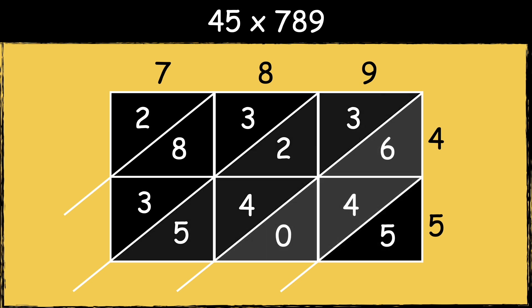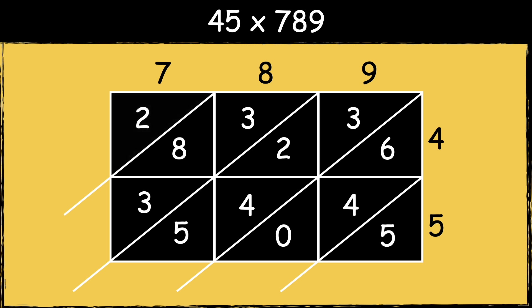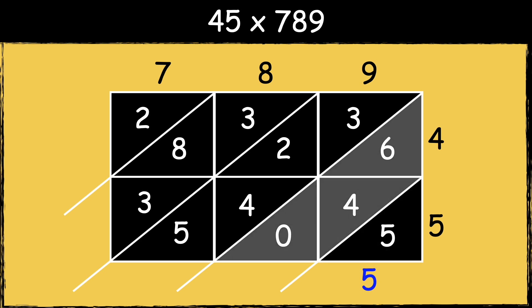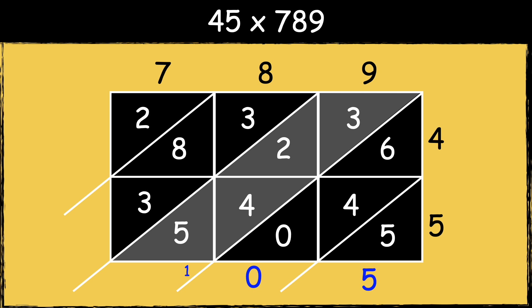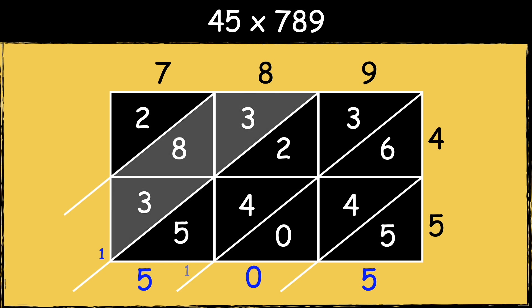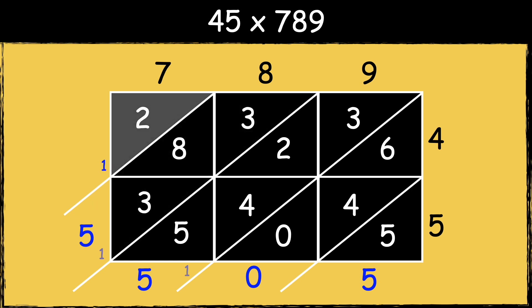The next step is to add along the diagonal strips, starting in the ones place going from right to left. In the ones place we have 5 add 6, which is 10. We will carry the extra 10 over to the next column. In the hundreds place we have 5 add 4 add 2 add 3 add 1, which is 15. We will carry the extra 10 over to the next column. Next we have 3 add 8 add 3 add 1, which is 15. We will carry the extra 10 over to the next column. And then in the ten thousands place we have 2 add 1, which is 3. So the answer is 35,505.